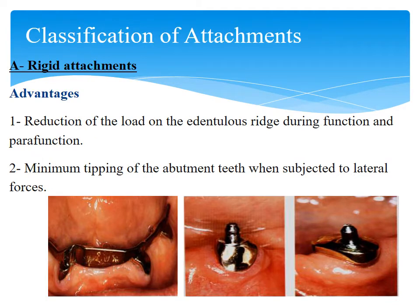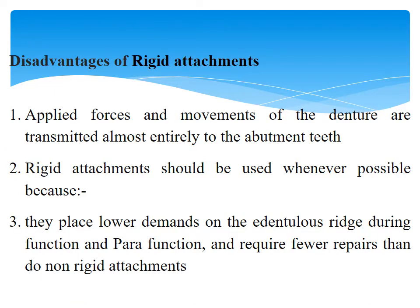The first classified group is rigid attachments. The advantages of rigid attachments are: first, reduction of the load on the edentulous ridge during function and parafunction; second, minimum tipping of the abutment teeth when subjected to lateral forces. The disadvantages are that applied forces and movements of the denture are transmitted almost entirely to the abutment teeth. Rigid attachments should be used whenever possible because they place lower demands on the edentulous ridge and require fewer repairs than non-rigid attachments.